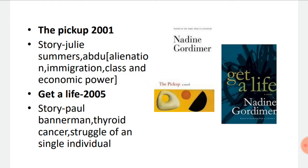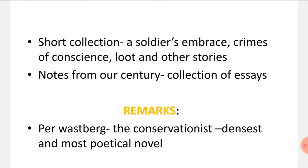Next we have 'Get a Life,' published in the year 2005. The story talks about the protagonist Paul Bannerman, who is suffering from thyroid cancer. This novel is different from her previous novels as it talks about the struggle of a single individual.